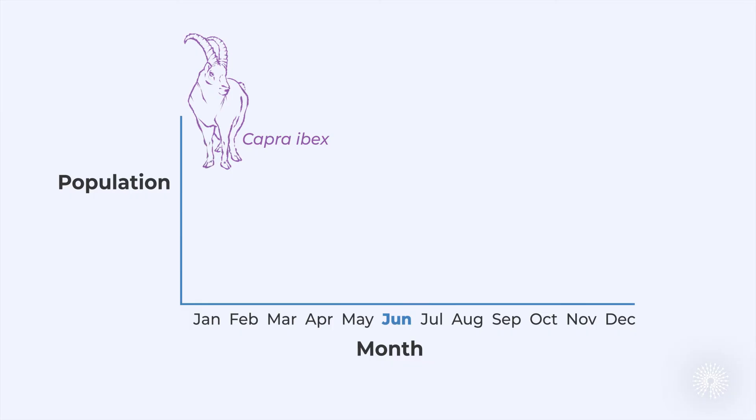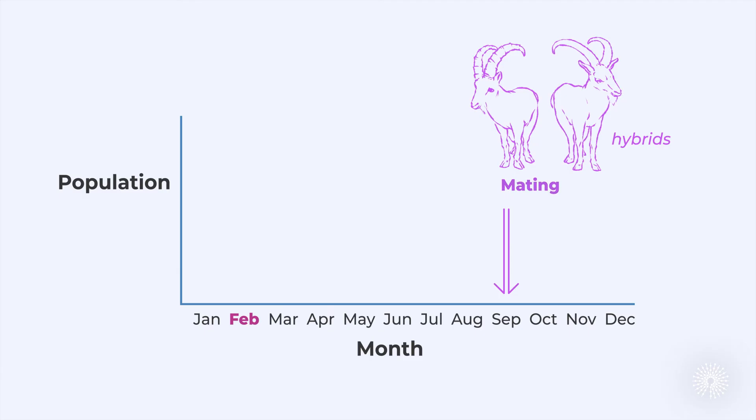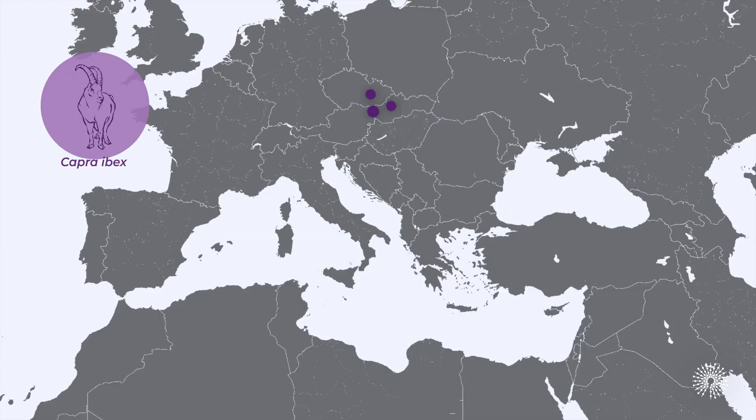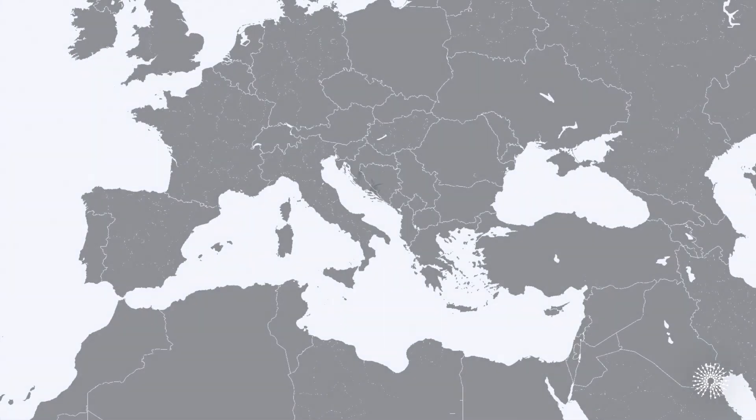You see, alpine ibex are adapted to high mountain habitats and they breed in winter so their offspring are born in the summer. Instead, the hybrids of cold and warm adapted goat species bred at the wrong time of the year. Their kids were born in the dead of winter and did not survive. This is how genetic rescue failed and alpine ibex in Slovakia went extinct twice.